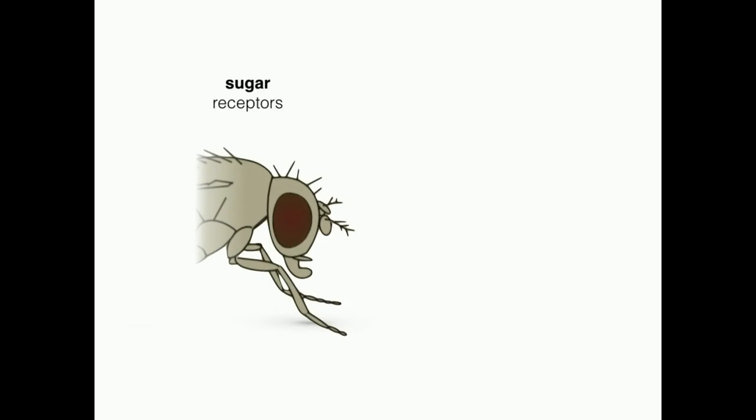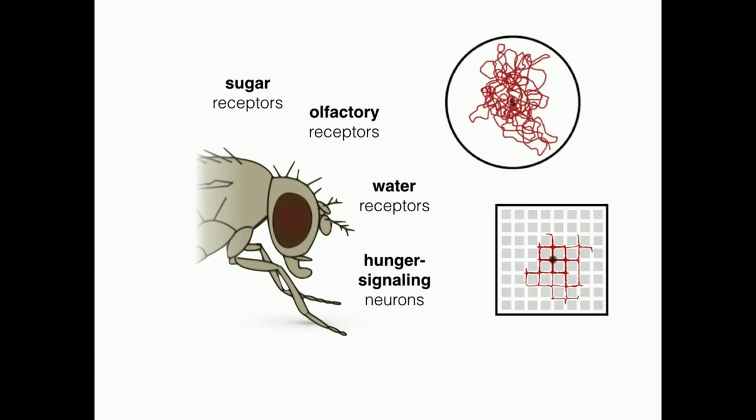Together, our results suggest that local search can be triggered by a variety of food-associated stimuli. In light of this, it is likely that these distinct sensory pathways converge onto a set of brain structures that may implement idiothetic path integration.